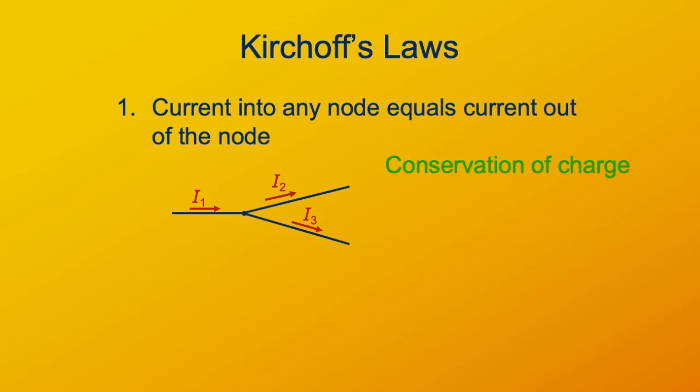So in this case, where we've got a node, we've got current I1 coming into the node and current I2 and I3 coming out of the node. This law arises, it's just an expression of conservation of charge. It's saying that the charge isn't building up anywhere in the circuit. It's not being created or consumed. Current just flows.